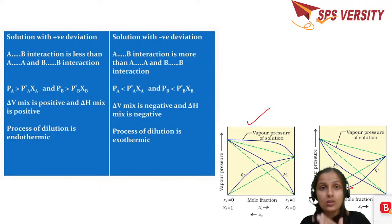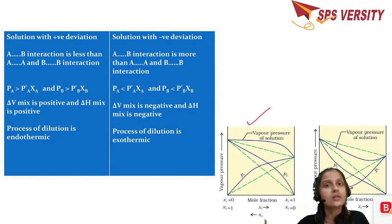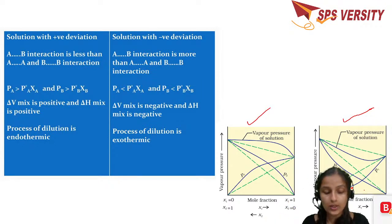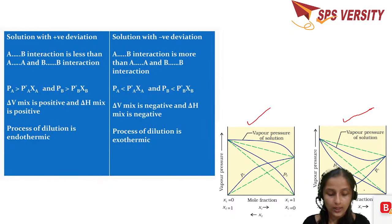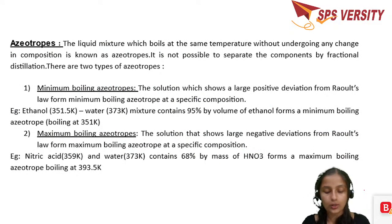With stronger A–B interactions after mixing, the molecules bind together and cannot vaporize easily — so vapor pressure decreases. This shows negative deviation from Raoult's Law, where the vapor pressure curves lie below the ideal (dotted) lines. Examples to remember: water and ethanol show positive deviation; water and nitric acid show negative deviation.